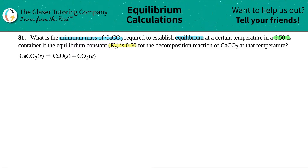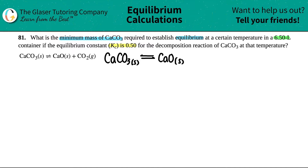Let me write that out a little bit bigger. CaCO3 (solid) comes to equilibrium with CaO (solid) plus CO2 (gas).